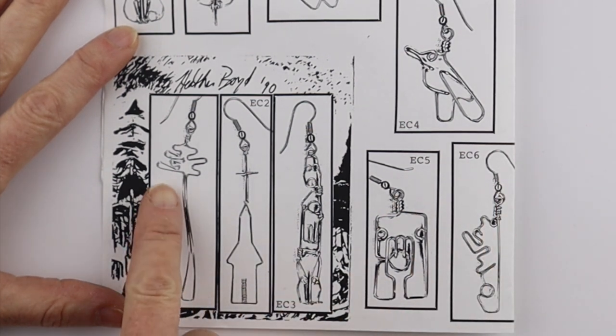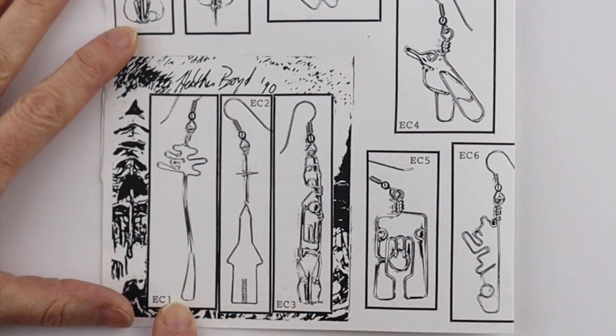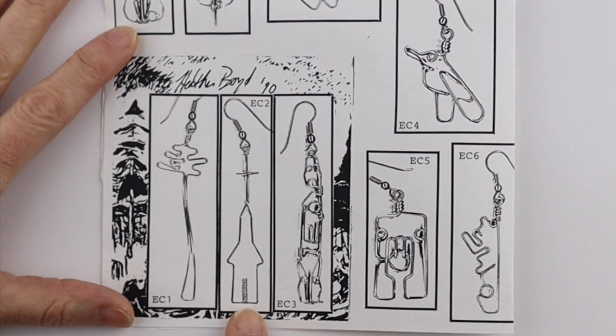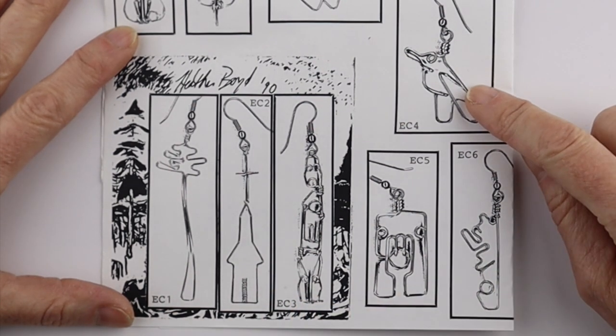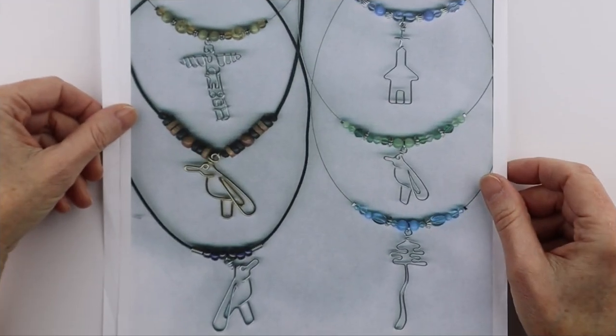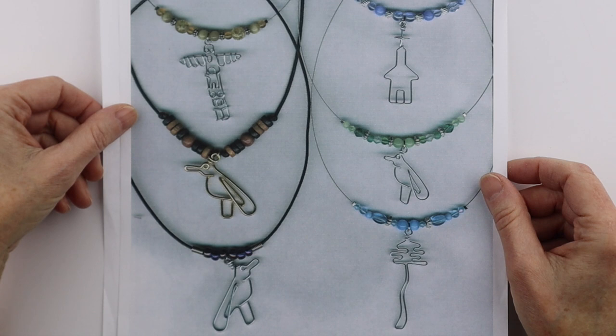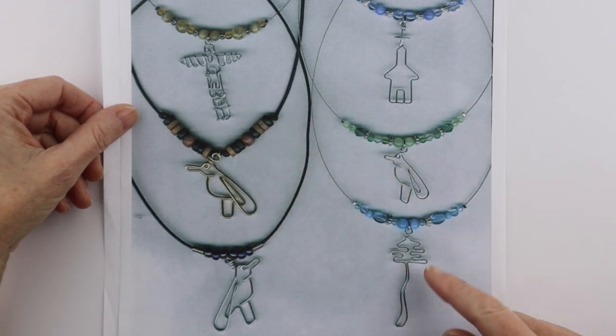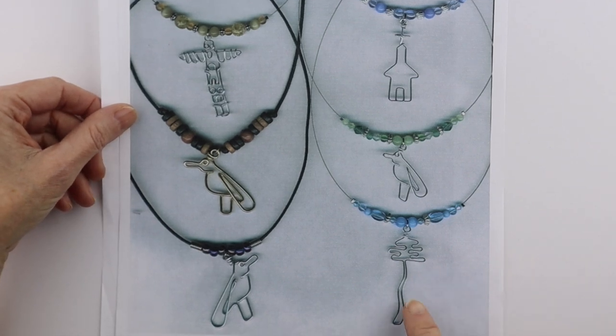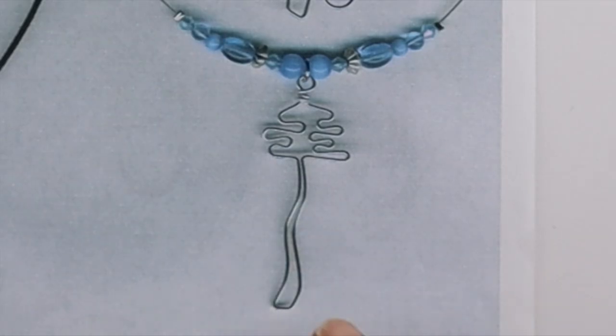The one we're going to focus on today is the tree, very typical of her style. I also had done a church, totem pole, and the iconic raven. In 2007 the Musée de Beaux-Arts in Montreal had an exhibition of Emily Carr work as well, and so I revisited the designs and made a collection of necklaces with the same types of designs. So here's the tree, and we are going to do something similar with a couple of other variations today.